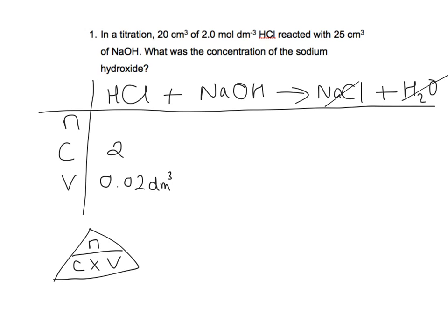Let's look at the volume of sodium hydroxide. Well, that's 25 centimetres cubed, so again I'm going to convert that to decimetres cubed by dividing it by 1000, and therefore on this side we're going to have 0.025 decimetres cubed of sodium hydroxide.